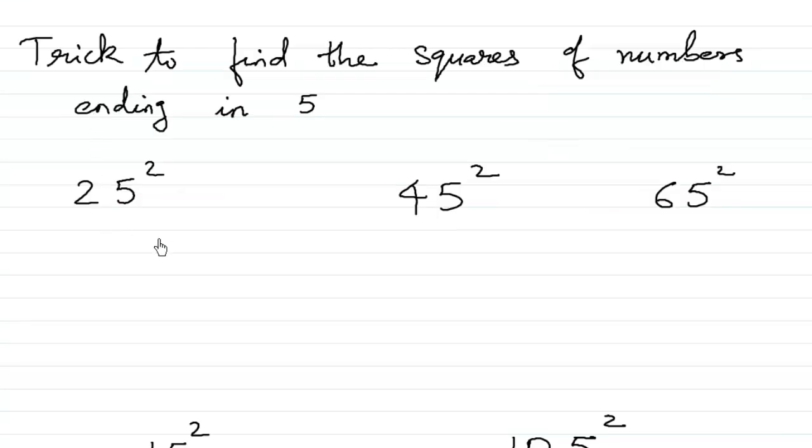Similarly, we have a trick to find the squares of all the numbers that end in 5. We do not have tricks for numbers which end in 2, 3, and 4, but we have the trick for 1 and 5. So now let us discuss how to find the squares of numbers that end in 5. This time the trick is a little different.